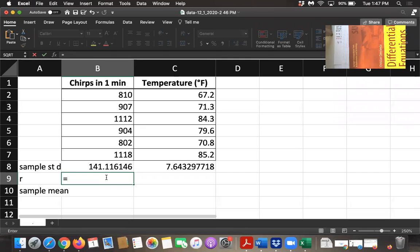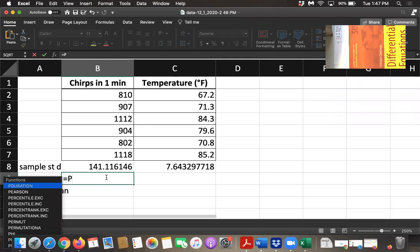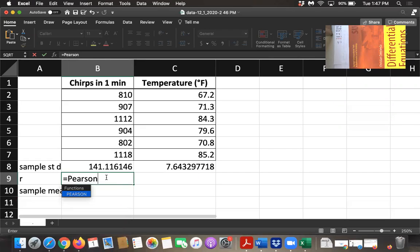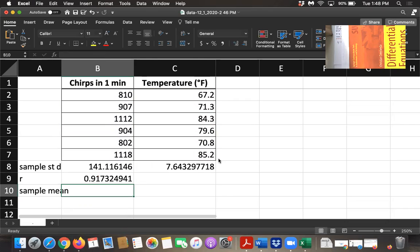Then we'll just drag and drop to get the sample standard deviation for our y values. And then to compute the linear correlation coefficient, we'll type equals Pearson, open parentheses, and then it wants an array for the first variable. Those are our x values. And then you type a comma, and then an array for our second variable. So you highlight the y values, close parentheses, and that gives you the r value.